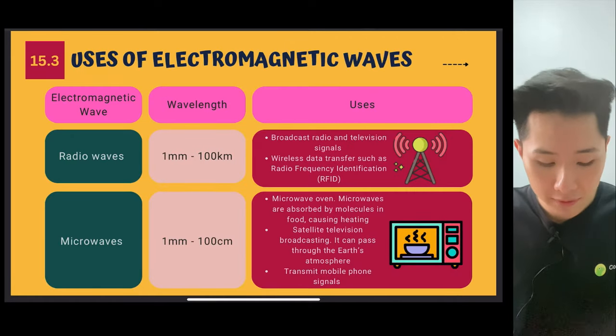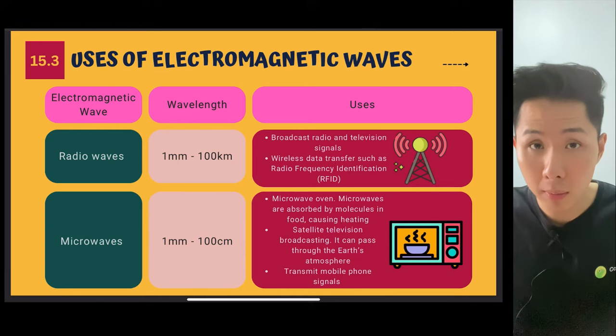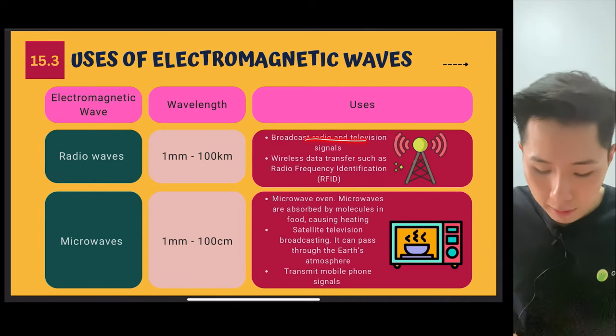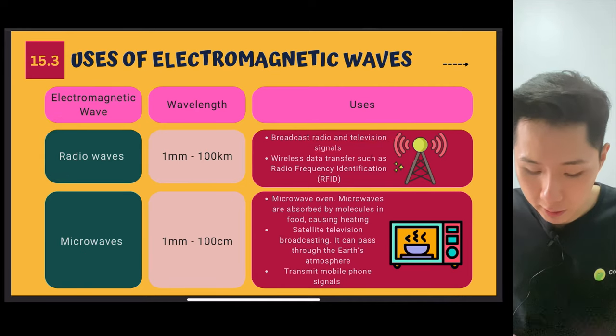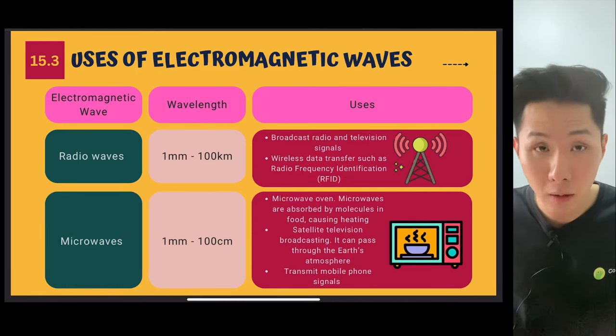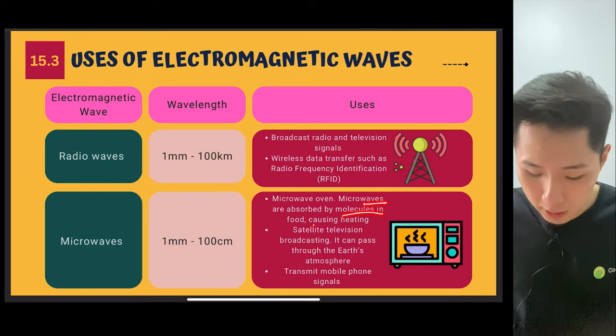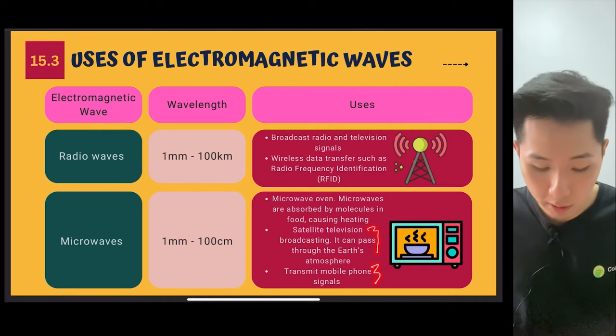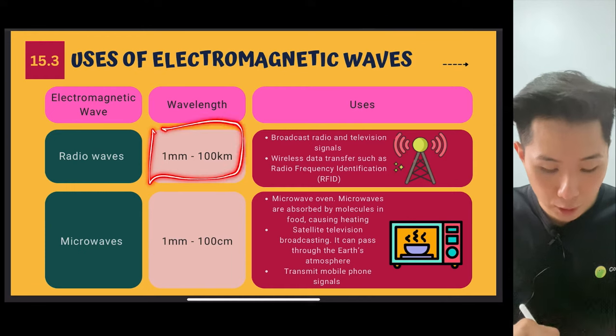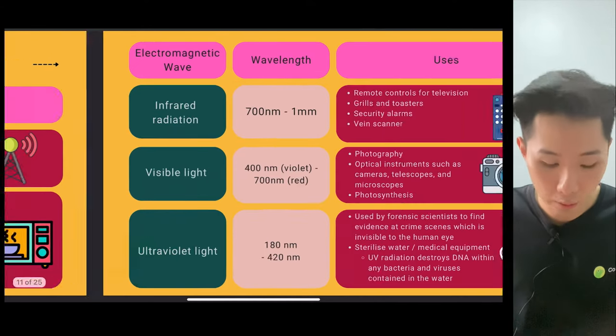So let's look into some of the application of this electromagnetic wave. I won't go into details because I think they are just facts. Radio wave, broadcast radio and television signals, wireless data transfer such as RFID. Whereas microwave, we have our microwave oven, microwave absorbed by molecules in food, causing heating. Satellite television broadcasting, transmit mobile signals. And here is their wavelength. You can see that radio wave, they have very long wavelength.